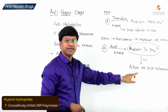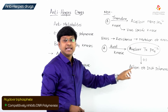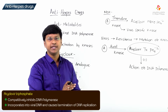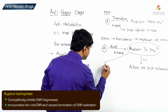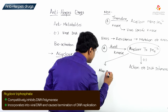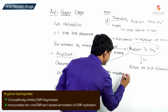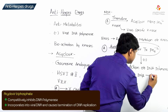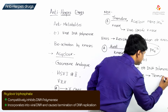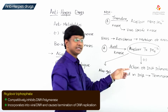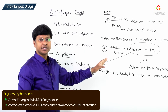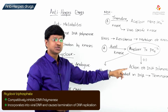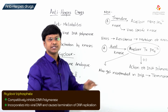Not only does this product inhibit the viral DNA polymerase, it also gets incorporated into the DNA of the virus and causes termination of the DNA chain. So acyclovir triphosphate competitively inhibits DNA polymerase and also causes chain termination.